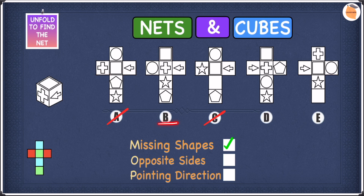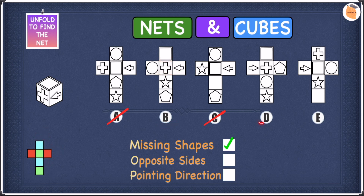In B, the square is here, the plus sign is over here, and the arrow is right here. They're all on different colours, so that means none of them are actually on opposite sides — we can leave B. In D, we have the arrow, the square, and the plus sign, and they're all on different colours, which means none of them are on opposite sides.